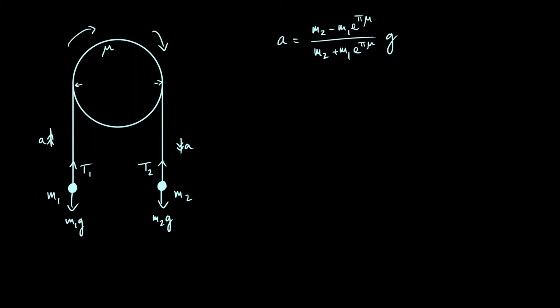By symmetry, you can see that if it's accelerating the other way, if it's accelerating such that m1 is going downwards while m2 is going upwards, you can just switch the 2s and the 1s around, because it's an entirely symmetrical system.